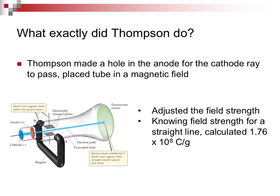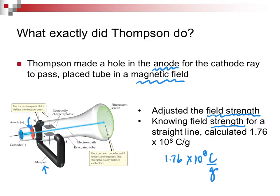What exactly did Thomson do? He made a hole in the anode so the beam could pass through, then placed the tube inside a magnetic field with a positive and negative pole, and adjusted the electrical field strength. Knowing the field strength, he calculated the charge-to-mass ratio as 1.76 × 10⁸ coulombs per gram. That's as far as we take it in General Chemistry.